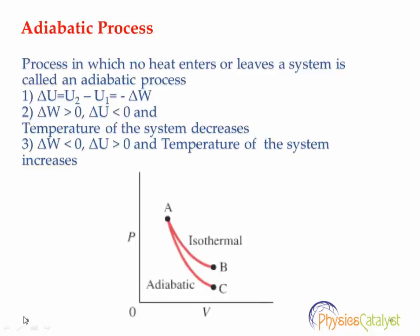Now the second process is the adiabatic process. An adiabatic process is a process where no heat enters or leaves the system. In this process, delta Q is zero because there is no provision for heat leaving the system and no provision for heat being given to the system. So from the law of thermodynamics, we know that delta Q equals delta U plus delta W. Since delta Q is zero, we can say that delta U is equal to minus delta W.